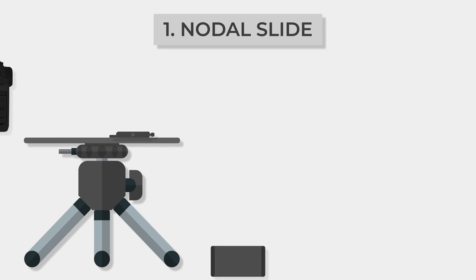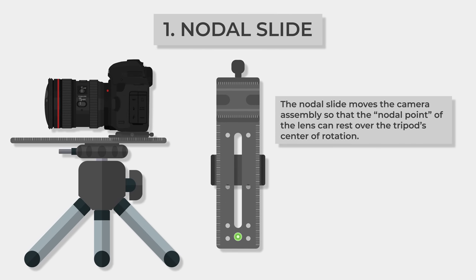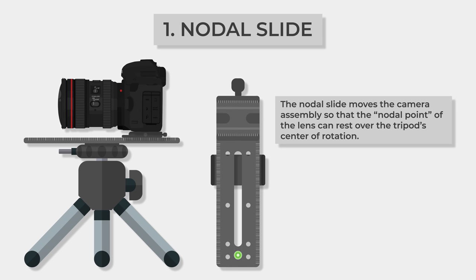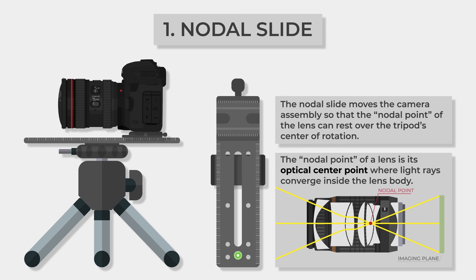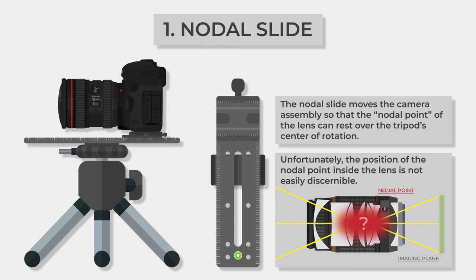While you usually don't need specialized gear to do photography, making a high-quality panorama will require a few things. First, you will want to pick up a nodal slide. A nodal slide will allow you to slide your camera assembly back and forth along your tripod head, letting you center the nodal point of your lens over the panning point of the tripod. The nodal point of a lens is its optical center point where light rays converge and then separate again to fall in the imaging plane. Its position inside the lens is not easily discernible, so we will need to find it ourselves.